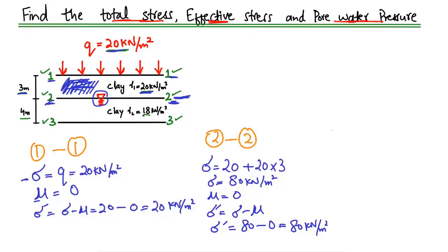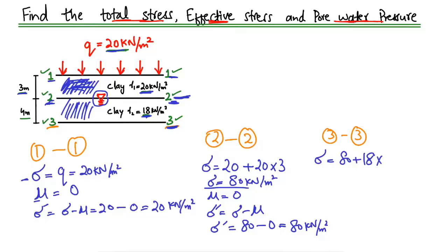Now for the third point, 3-3. The total stress equals the stress at 2-2, which is 80 kN/m², plus the stress from the clay layer below, with a unit weight of 18 kN/m³ over a depth of 4 m, giving 72 kN/m². Adding: 80 + 72 = 152 kN per square meter total stress at point 3-3.